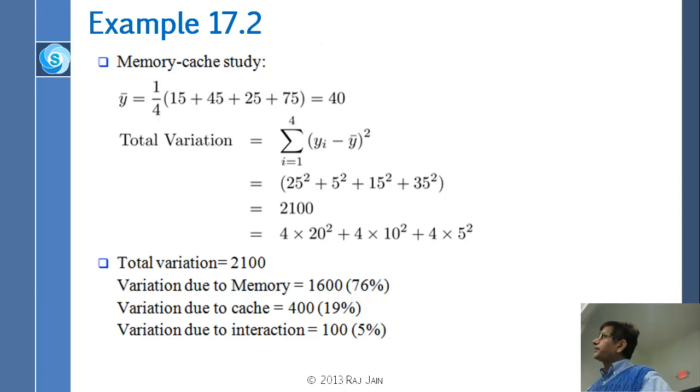In the memory cache study, we can say that the total variation which was 2100 can be divided into 3 parts. First part is 76 percent can be explained by memory, 20 percent can be explained by cache, and 5 percent is due to interaction. What that says is if you really wanted to optimize this variable, which is the performance in MIPS, the first thing you really need to work on is the memory, because memory really gives you the best change. Then you worry about the cache, and then worry about the interaction.